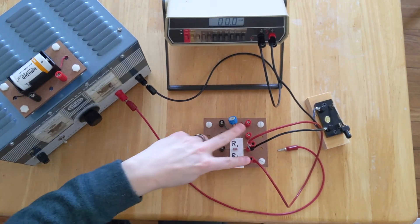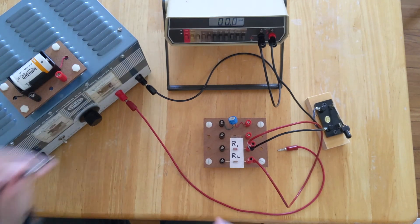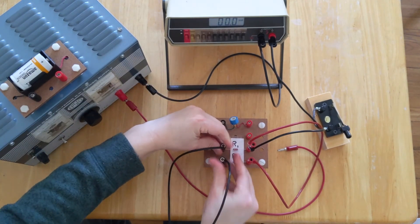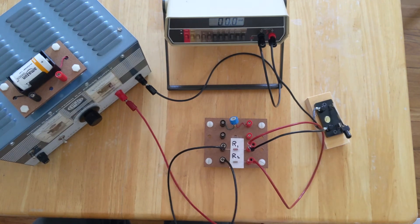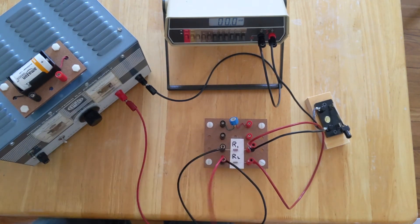And then the electrons are going to go through both resistors here, and then they're going to combine back together into one channel. And I'm going to grab that one channel here and head back to the power supply.